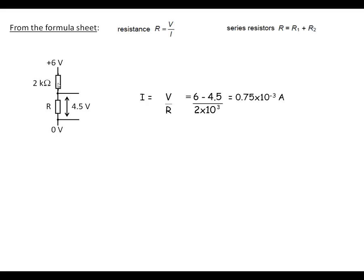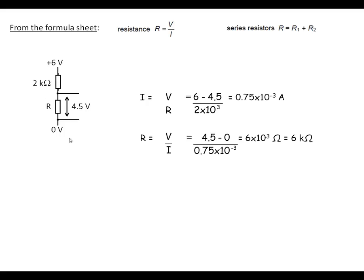Now the current flowing through here will be the same current flowing through this resistor here. So therefore, we can use R equals V over I. We know we've got 4.5 volts across it and 0.75 milliamps going through it — that voltage at the top, that voltage at the bottom — and this comes out as being six kilohms. So in this combination, if that's 2 kilohms, that will be 6 kilohms.